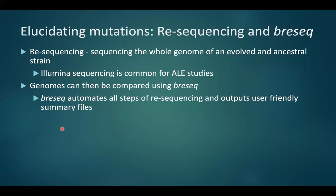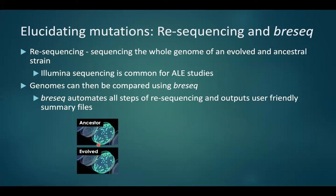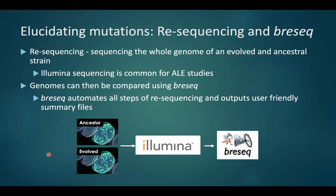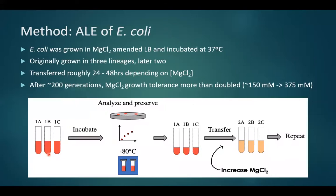Once the evolution experiment was completed over a number of months, I elucidated mutations using a bioinformatics pipeline known as Breseq. This involves taking the ancestral strain and the evolved strain through an Illumina sequencing platform, then plugging into Breseq, which outputs a summary file comparing the ancestral genome to the evolved genome and identifies where mutations occurred throughout the ALE experiment.